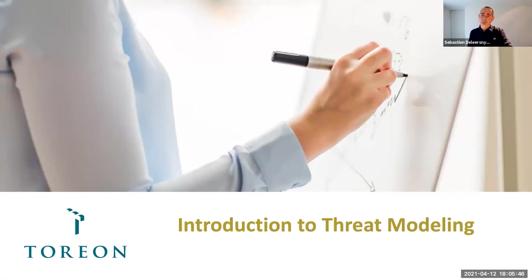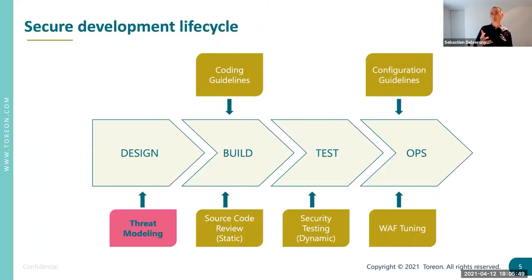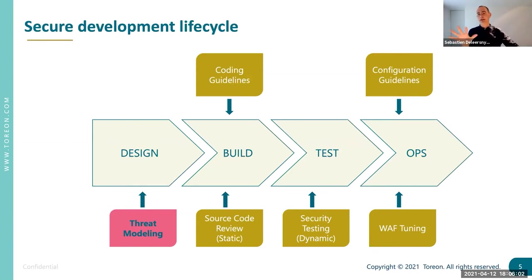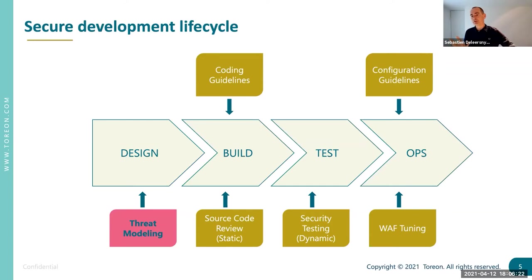What is threat modeling? Threat modeling is an activity to make sure that upfront, while you're designing a system, you cover security requirements and security design flaws. What you see here is an overview of different stages typically seen in any development lifecycle — this can be software, hardware, an IoT device, or a medical device. You always have some design activity, then systems are built, hopefully tested, and then operated in an operational environment. These stages apply whether using agile sprints or a waterfall model.